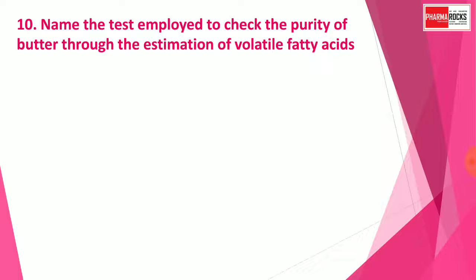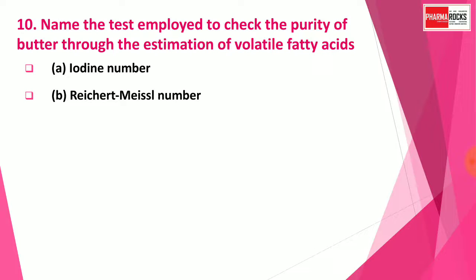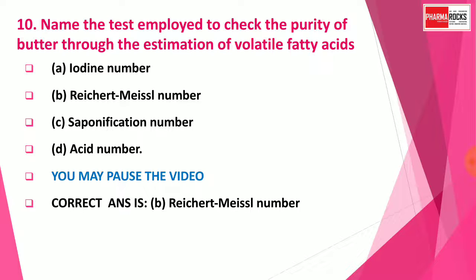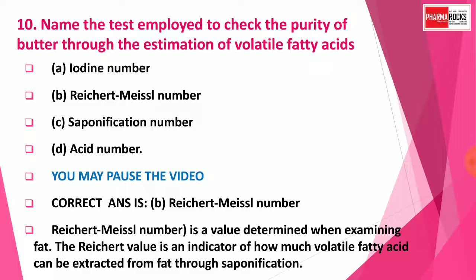Question 10: Name the test employed to check the purity of butter through estimation of volatile fatty acids — Option A: Iodine number, Option B: Reichert-Meissl number, Option C: Saponification number, Option D: Acid number. The correct answer is Option B: Reichert-Meissl number, also called RM number. The RM number is an indicator of how much volatile fatty acids can be extracted from a fat through saponification. Students sometimes select saponification number, but the right answer is RM number.